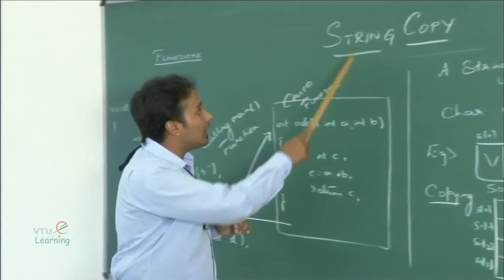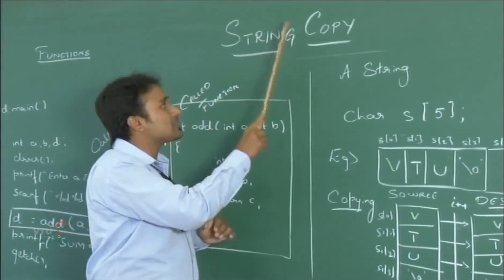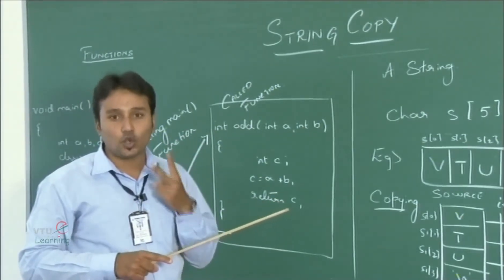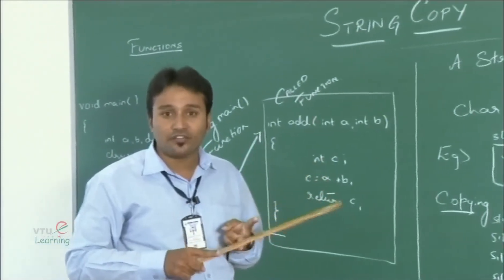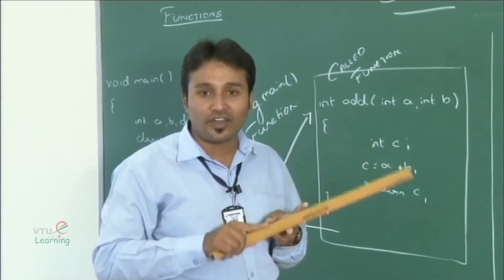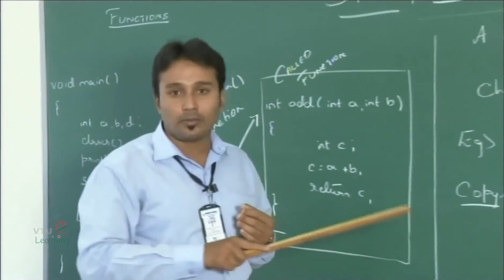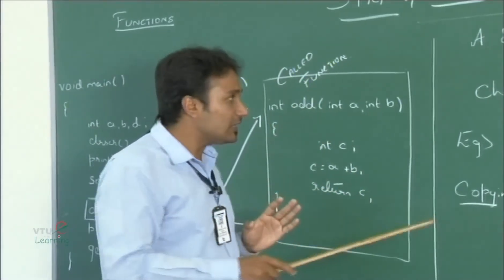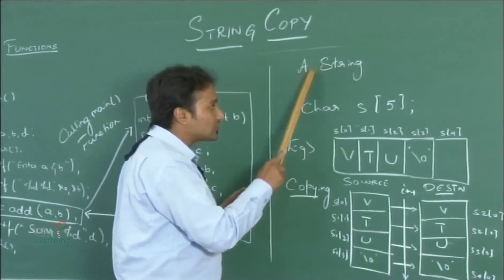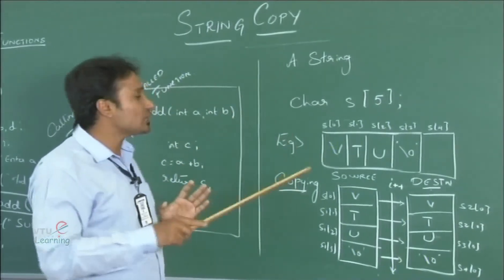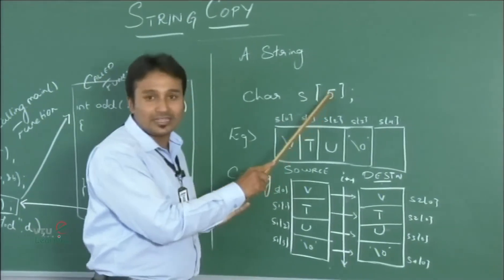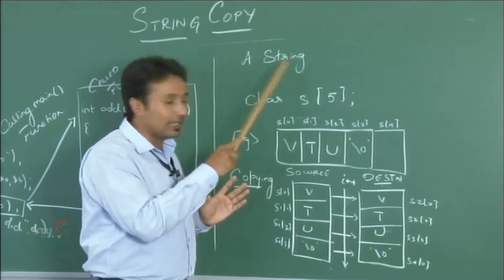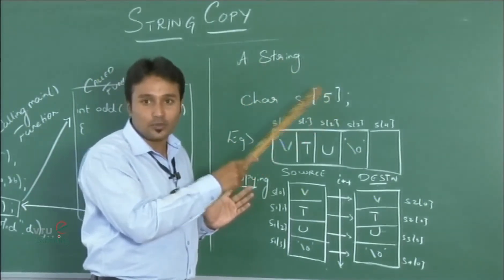Now let us move back to string copy. The logic behind the string copy function is to copy from a source string to a destination string. We have two methods: one is using the library function strcpy defined in the string.h header file. Since our program should not use the library function, we focus on a user defined function. A string is an array of characters — the declaration is an array name with a size and data type. If the data type is char, it is an array of characters, which is a string.